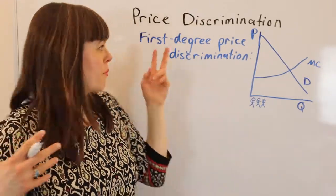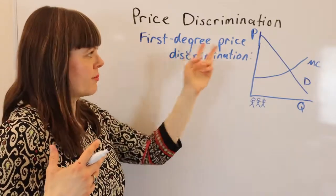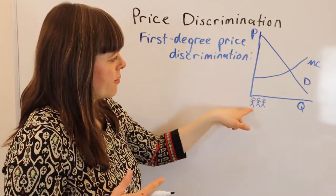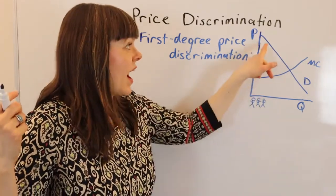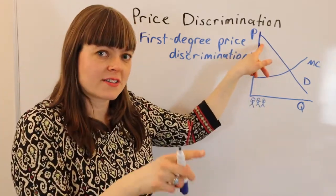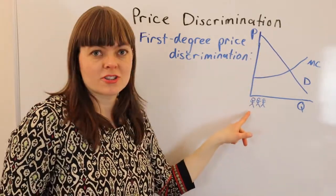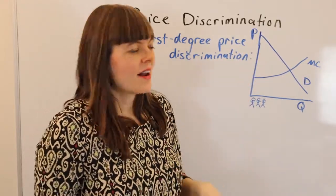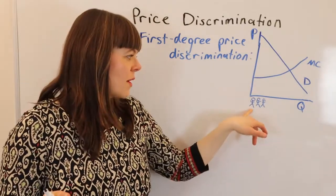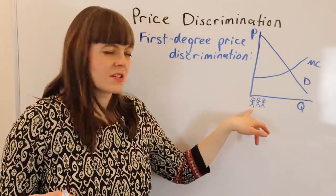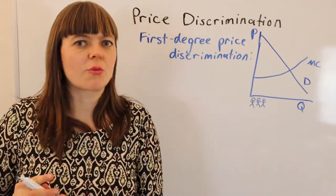But with perfect price discrimination — first degree price discrimination — the firm looks at that person and magically sees inside their head and says: I see that you value this product at $100, so I'm going to charge you personally $100. Now we know that is impossible; no firm can perfectly know what a person is willing to pay.